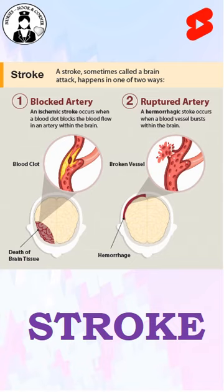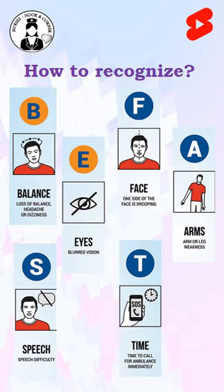If the blood vessels in the brain rupture, then we call it as hemorrhagic stroke. Now to recognize the stroke, you should follow BE-FAST.